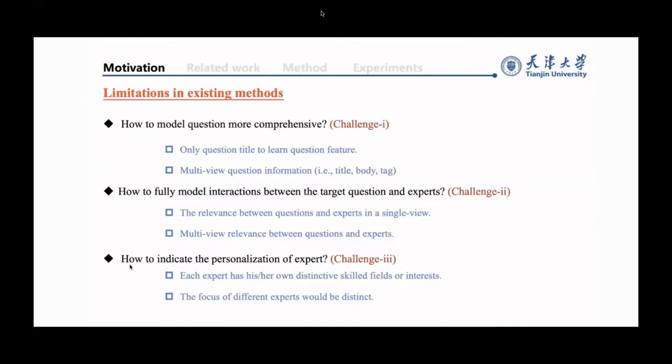Secondly, how to fully model interactions between the target question and the experts? Learning the relevance between the target question and the historically answered questions is crucial in expert finding. Different historical questions of the experts are of different relatedness to the question. Hence, we use more relevant historical questions to model the experts.